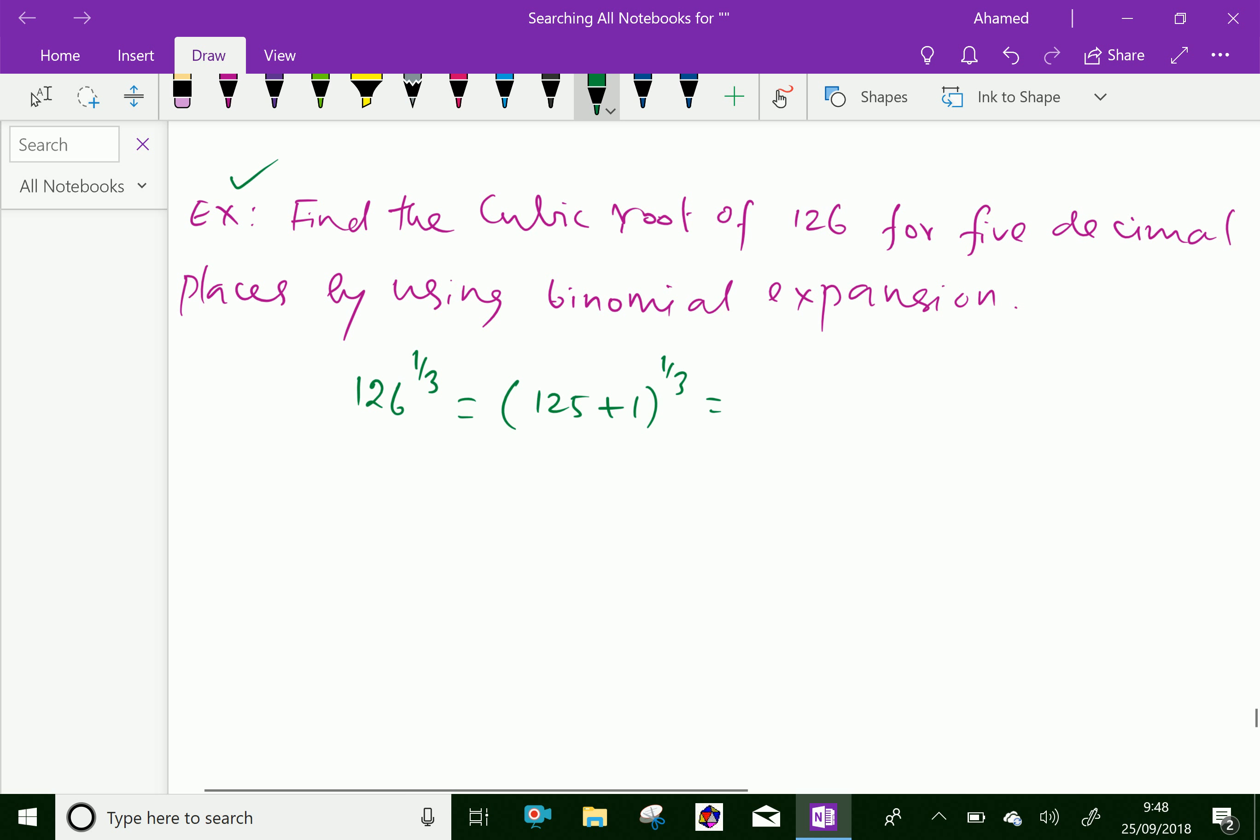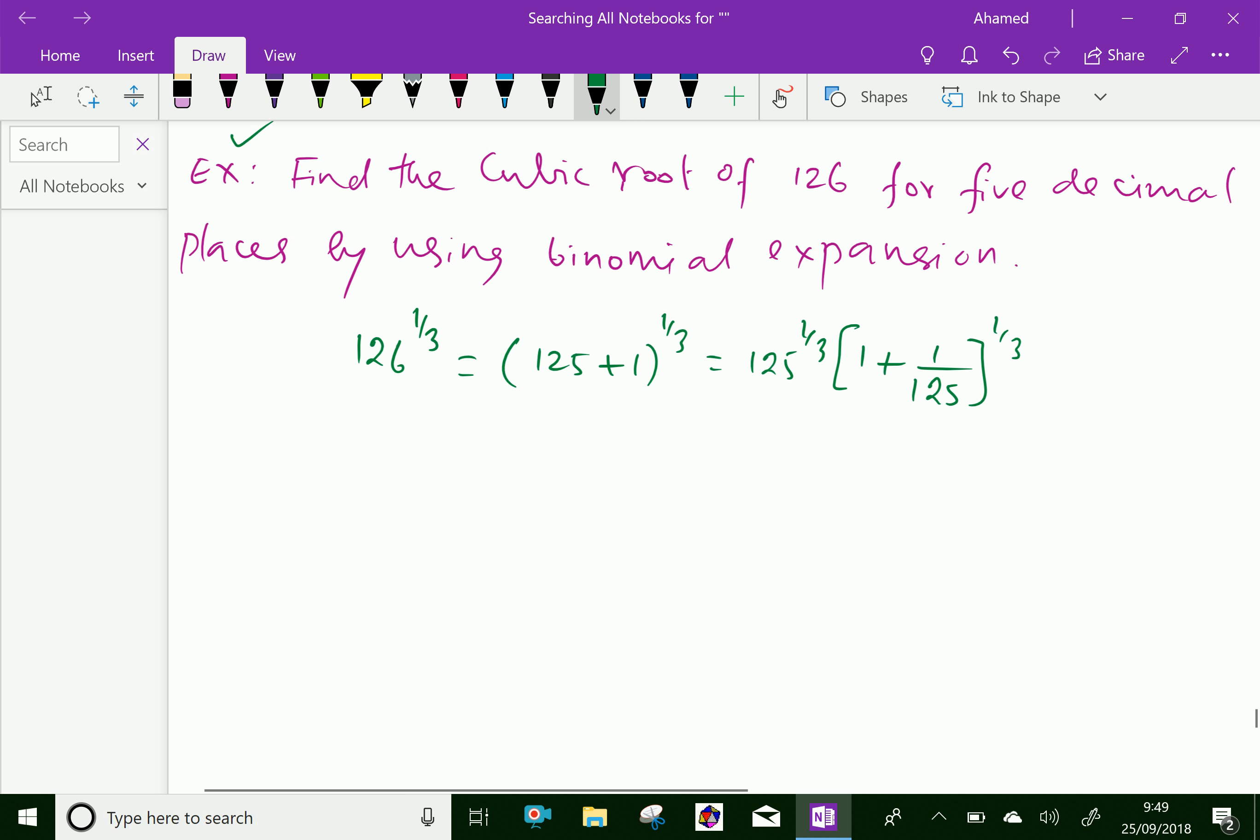Further, here 125^(1/3) is taken out, like 125^(1/3) times (1 + 1/125)^(1/3). Now, 125^(1/3), already we know that it is 5, and we will expand (1 + 1/125)^(1/3).